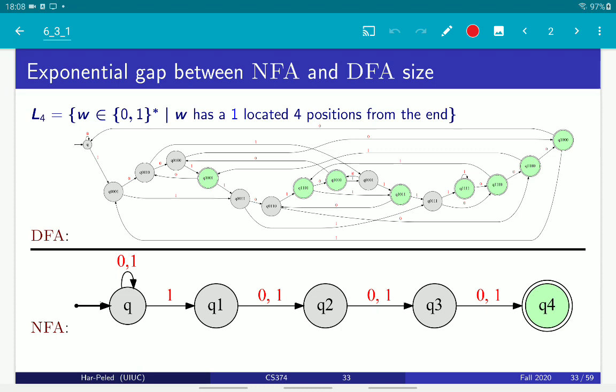So the NFA is very simple, right? You just guess when you're in the beginning until you get the 1 that is in the fourth location. And then you just move 3 locations to the end and that's it.